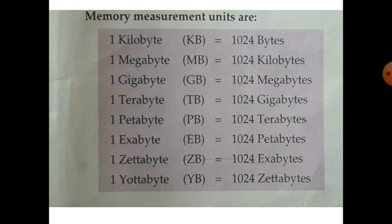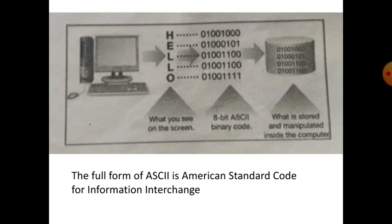This is a very important chart for further studies of memory in senior classes. As you can see on the screen, the computer converts a single word such as 'hello' into binary digits. The process of converting alphabets into binary digits takes place in the computer's brain. The computer stores memory in the form of two digits — 0 and 1 — also known as binary digits. The full form of ASCII is American Standard Code for Information Interchange.